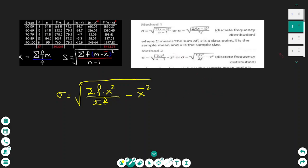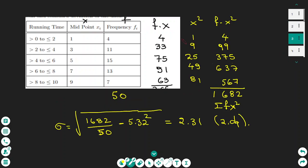I need to make additional columns on this table to find X squared and F times X squared. I found X squared by squaring the midpoints, the X in the second column.